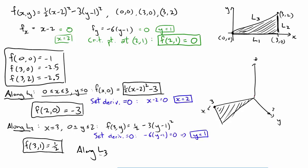So now, along L3. Here's L3 here. How would you describe it? Take a moment and see if you can come up with the equation for that line. Pause the video if you have to. That line between 0, 0 and 3, 2 has equation y equals 2 thirds x. So the height of the surface along that line, just replace y with 2 thirds x. We get 1 half x minus 2 squared minus 3, 2 thirds x minus 1 squared. Once again, set the derivative equal to 0.